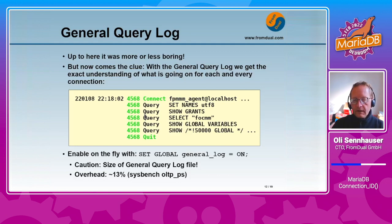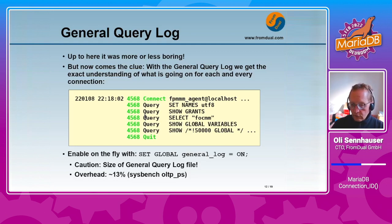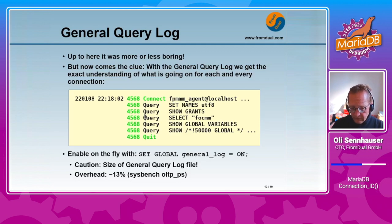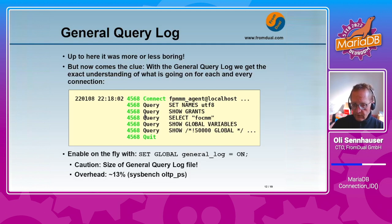The general query log can be enabled on the fly with the command SET GLOBAL general_log = ON. If you do that on a production system, be a little bit careful because the size of the general query log can grow quite quickly and fill up your disk. So be careful when enabling it on production if you don't have enough disk space.